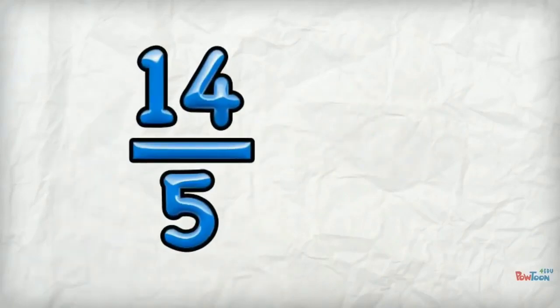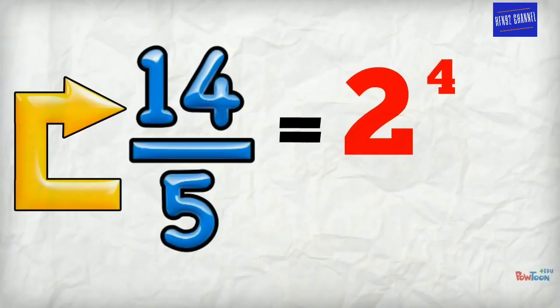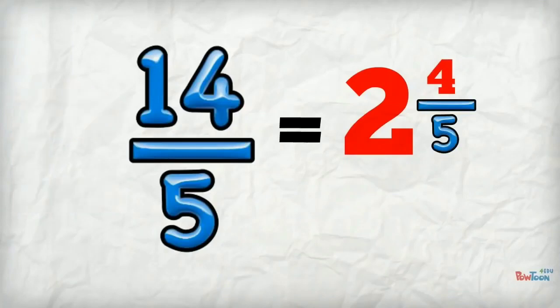14 divided by five. How many fives in 14? Two fives are ten, remainder four. Use the original denominator. We're done.